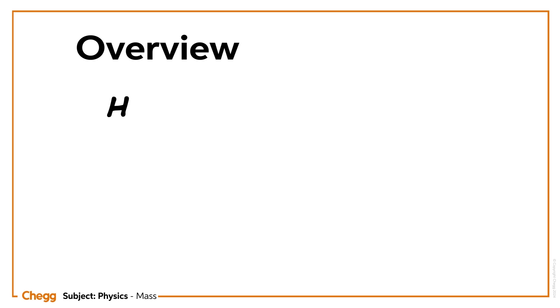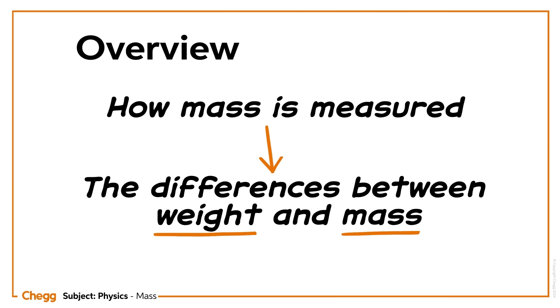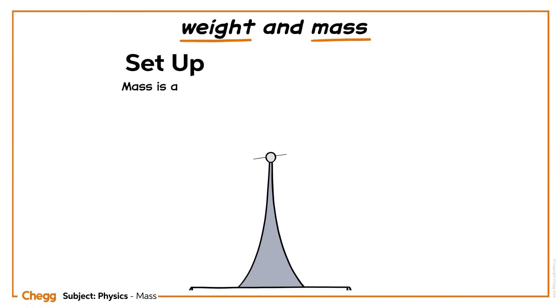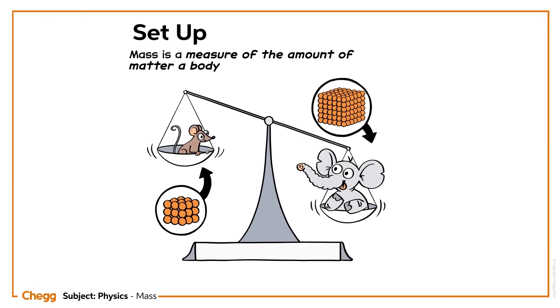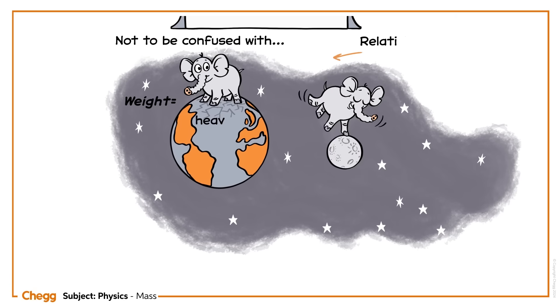In this video we'll run through how mass is measured and explore the differences between weight and mass. Mass is a measure of the amount of matter a body or particle contains, not to be confused with weight or relativistic mass.